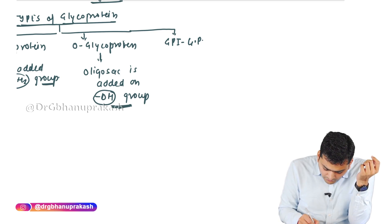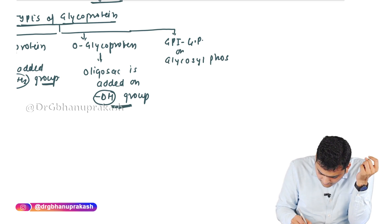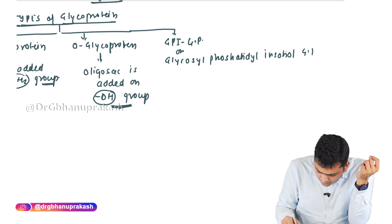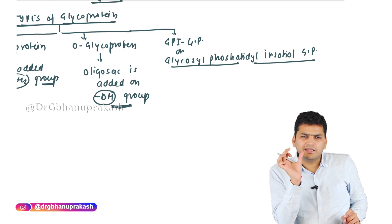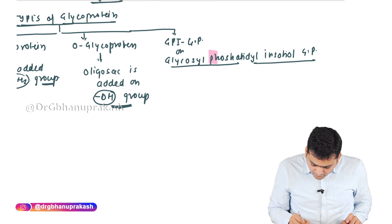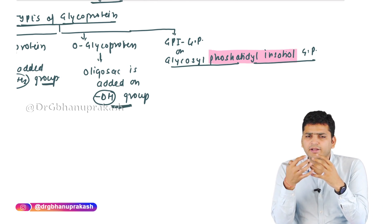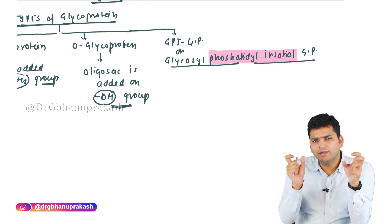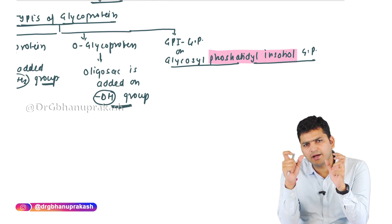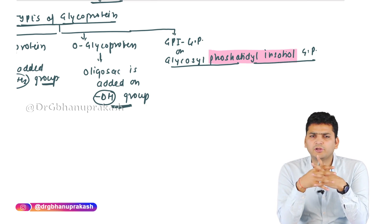The third type is the GPI-type of glycoprotein. The full name of GPI is Glycosyl Phosphatidyl Inositol glycoprotein. In this type, you are not only adding the oligosaccharide but also adding it along with Phosphatidyl Inositol on the protein. Adding the glycosyl part along with Phosphatidyl Inositol on the protein is called the GPI-type of glycoprotein.